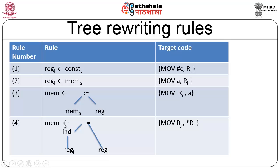Rule 4 uses indexed-based addressing. The final target is memory — the value will be a memory. Register j is assigned to an indexed location of register i. The instruction is: move Rj, *Ri. When using indexed-based addressing, Ri typically contains an address; dereferencing it gives the contents.